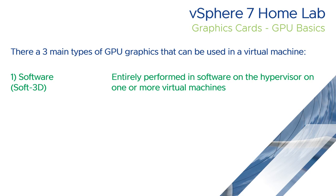The first is the original software or Soft3D version. This is a software-generated VGA card which is entirely performed in software on the hypervisor and can be used on one or more virtual machines — so every virtual machine can have its own software graphics card. This was the original way of doing things in VMware.